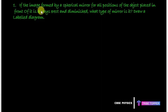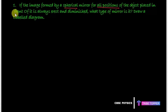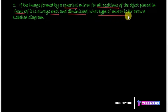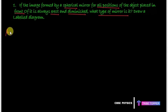Here's the first question. It says: if the image formed by a spherical mirror for all positions of the object placed in front of it is always erect and diminished — so it's an erect and diminished image no matter wherever you place the object — then what type of mirror is it? And draw a labelled diagram.